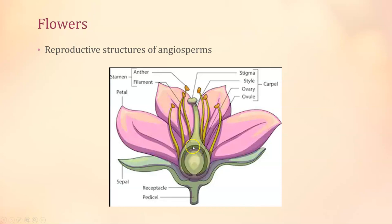The central whorl is the female structure called the carpel — sometimes called the pistil in middle or high school, but correctly it's the carpel. The carpel has three parts: the stigma, the style, and at the base the ovary. The ovary contains the ovules, and the ovules have the eggs. So this entire structure is basically the sex organs of a plant.